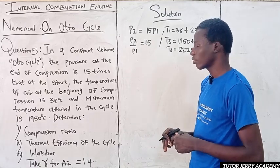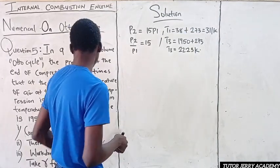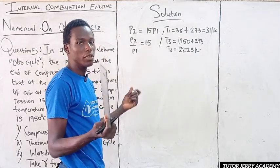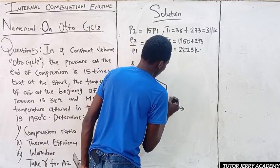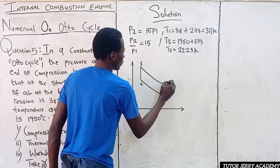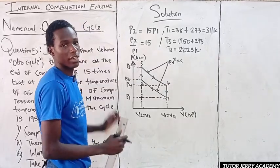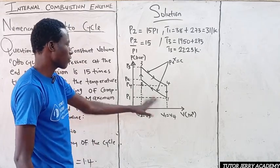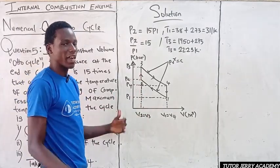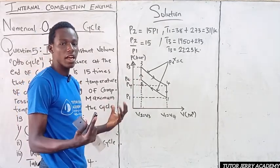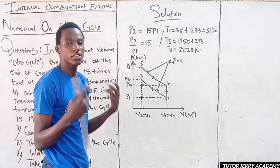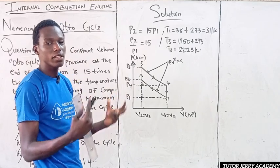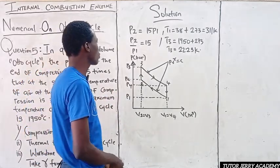Now let's find the compression ratio. Here is a sketch of the PV diagram showing four processes: process 1 to 2 is isentropic compression, 2 to 3 is heat addition at constant volume, 3 to 4 is isentropic expansion, and 4 to 1 is constant volume heat rejection. Let's proceed to solve.